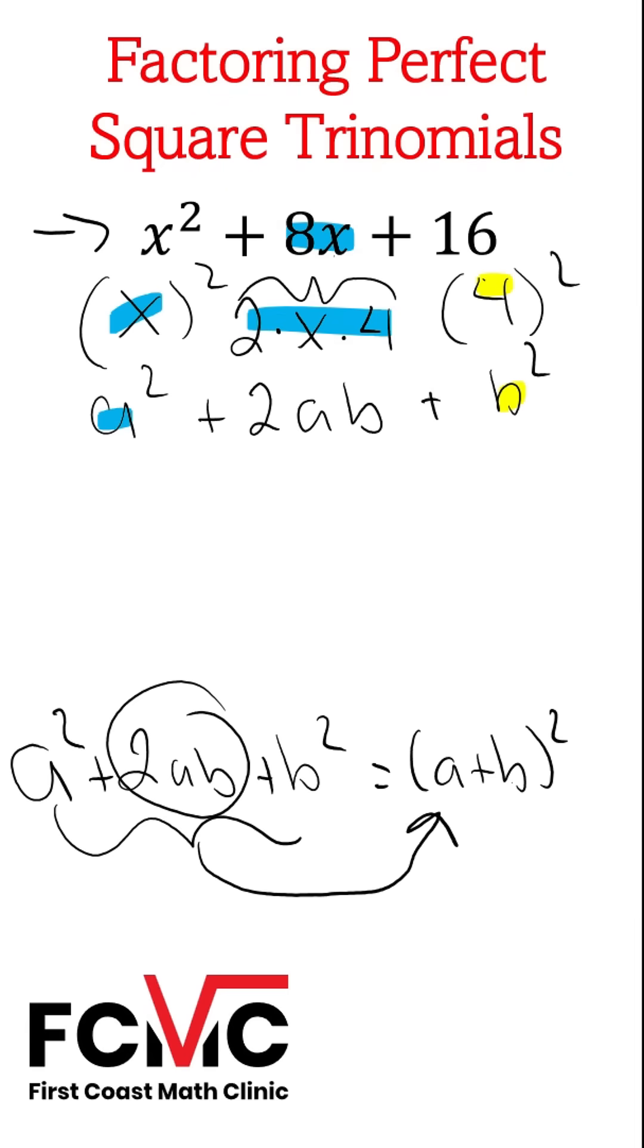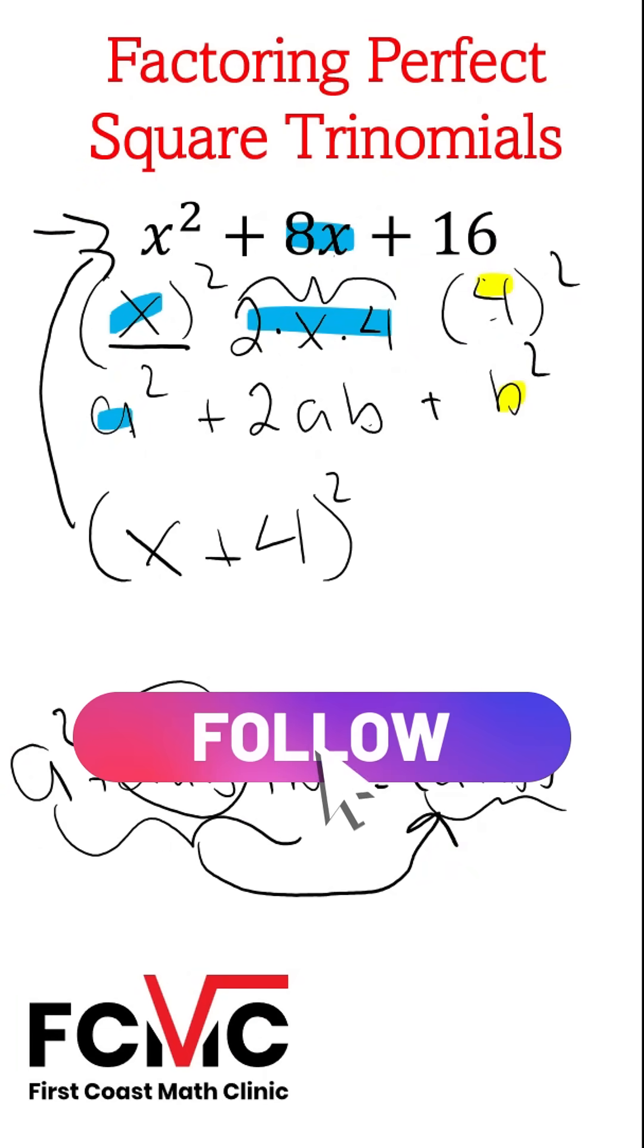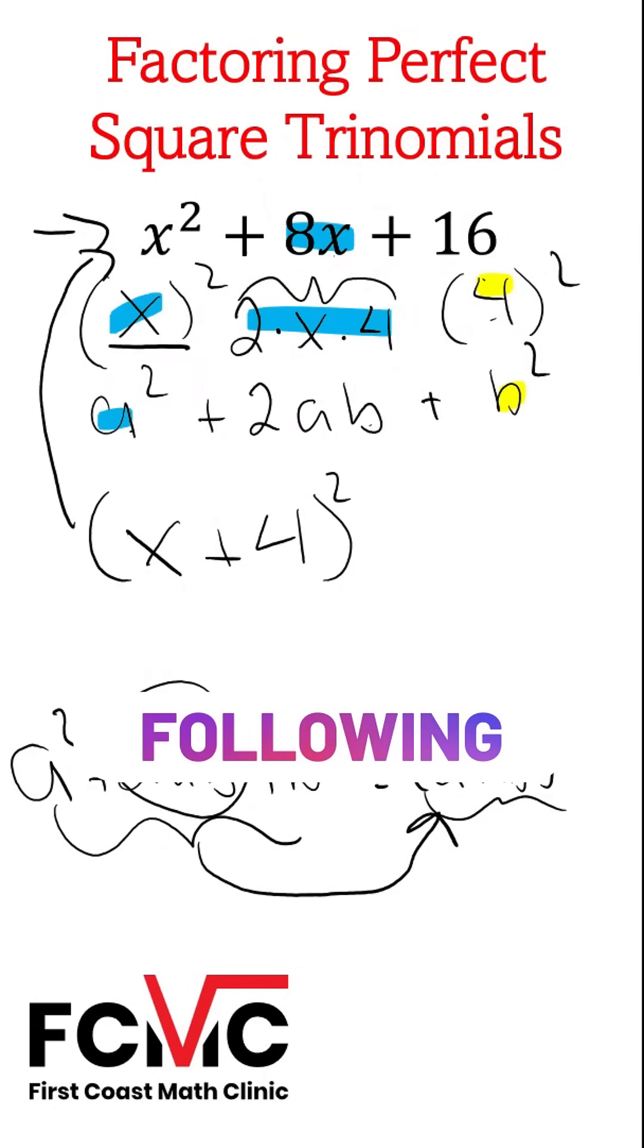So this checks, this is a perfect square trinomial. We know that a squared plus 2ab plus b squared, that's equal to a plus b squared. So our a value is x, our b value is 4. So our answer is going to be x plus 4 squared. That's the binomial b squared to get this trinomial x squared plus 8x plus 16. So our answer here, x plus 4 squared.